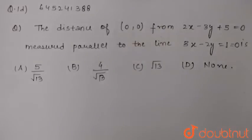We have to find the distance of (0,0) from 2x minus 3y plus 5 equal to 0, measured parallel to this line.